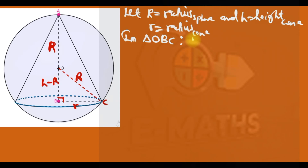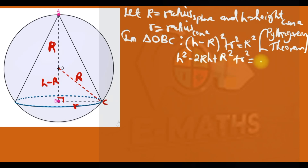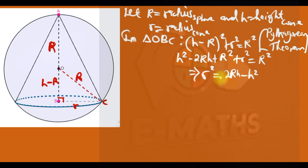By the Pythagorean theorem: (H − R)² + r² = R². Expanding: H² − 2RH + R² + r² = R². The R² terms cancel, so r² = 2RH − H². Therefore r = √(2RH − H²). Whenever we are asked to find the radius of a cone inscribed in a sphere, that is the formula.